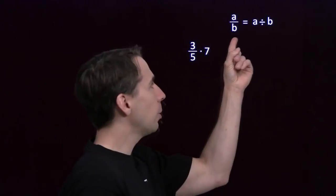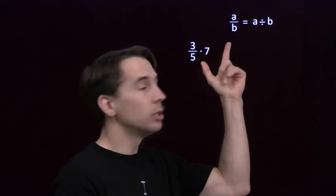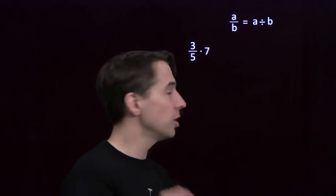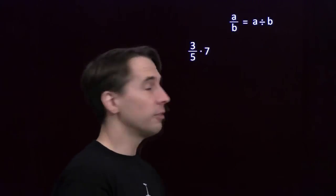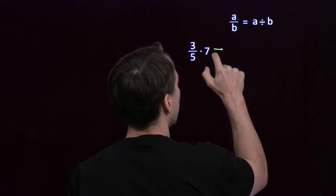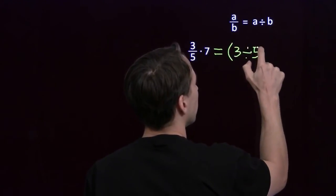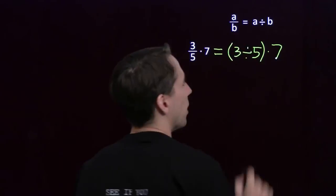How do we do that? Well, we go back to what's our definition of a fraction? It's just a number. Remember that, right? Fraction is a number. It's the number 3 divided by 5. So let's go ahead and write that. Three fifths is 3 divided by 5.